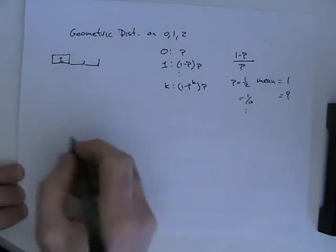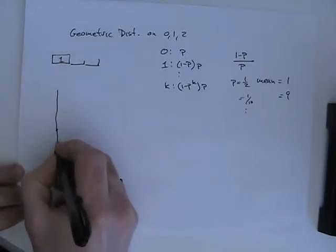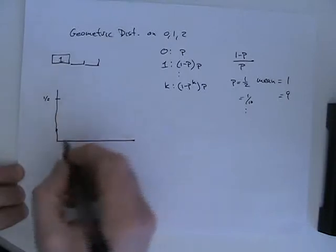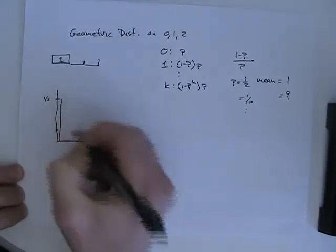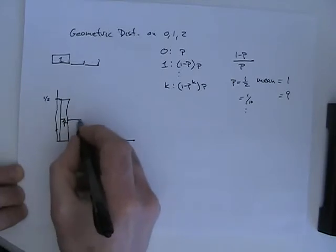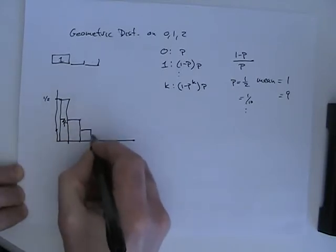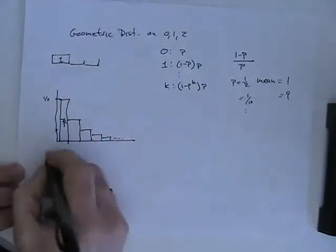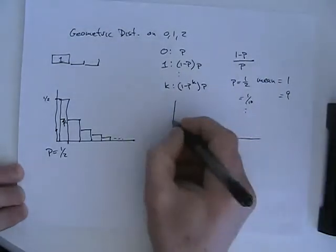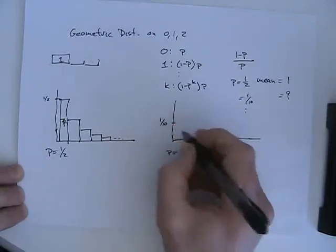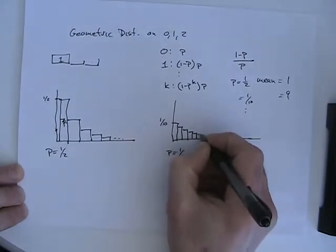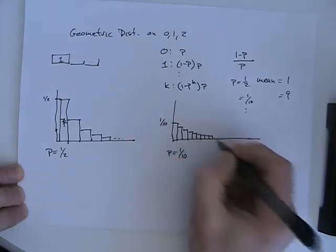If we graph this out, for p equals 1/2, the probability of interarrival time 0 is 1/2, the probability of 1 is 1/4, and so on. For p equals 1/10, the distribution would go down much more slowly.